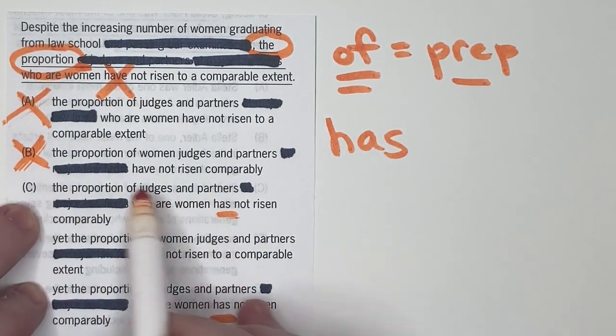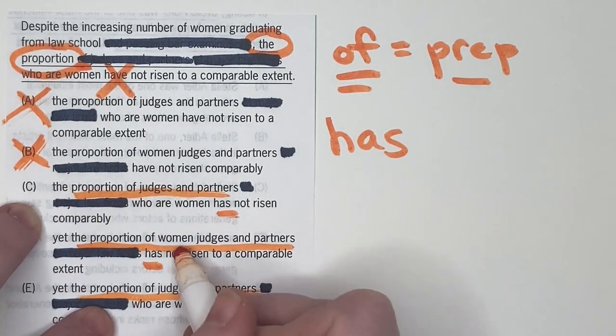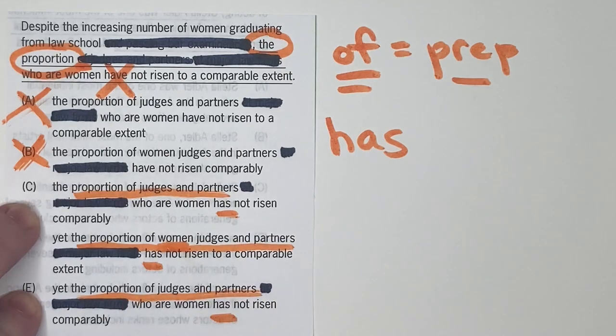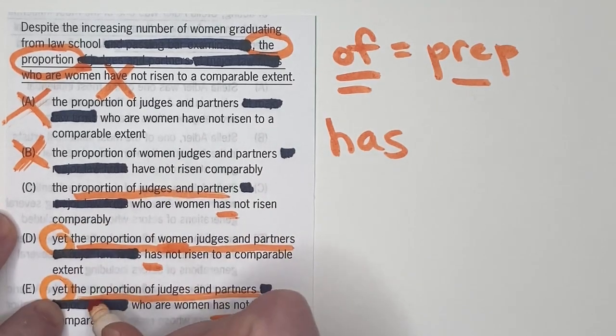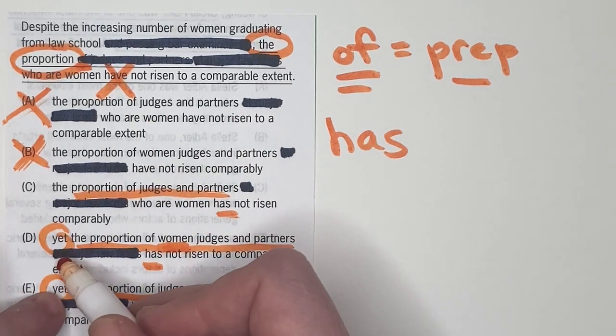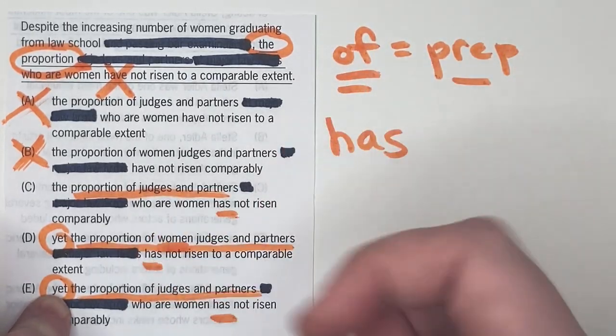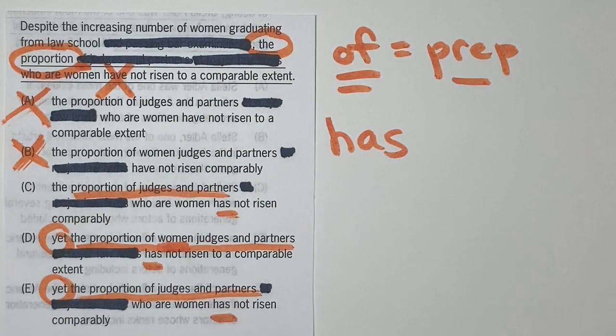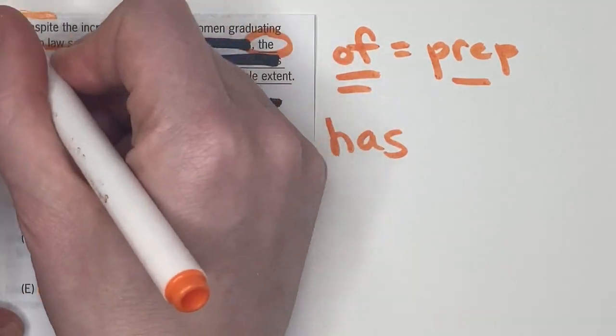They both say the proportion of judges and partners, right? The proportion of judges and partners, proportion of judges and partners, proportion of judges and partners. Well, this one has women in it, but other than that, they're all the same. Really the major difference here is with this word yet in the beginning. So yet the proportion, whereas C doesn't have it. So it's an interesting question. Does the addition of this word yet provide us with more clarity or less clarity in terms of the meaning of the sentence? This I would say isn't tested that often,